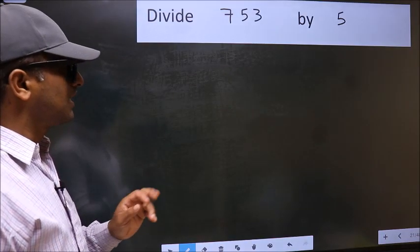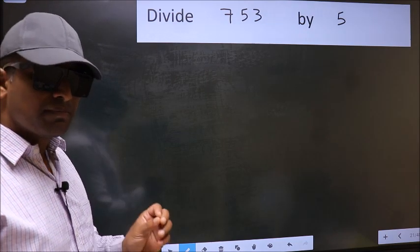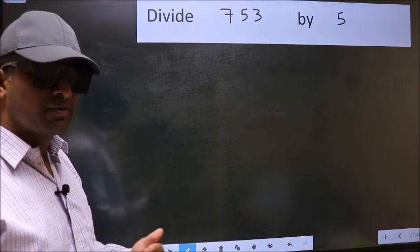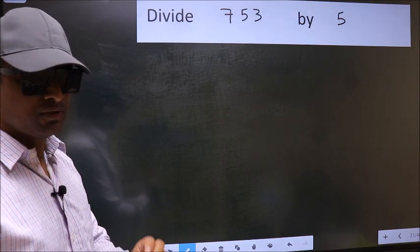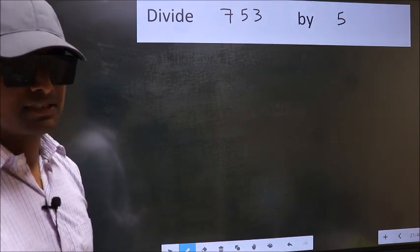Divide 753 by 5. While doing this division, many do this mistake. What is the mistake that they do? I will let you know. But before that, we should frame it in this way. Okay.